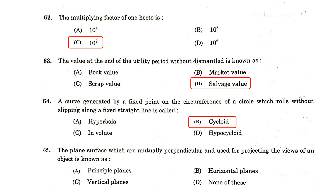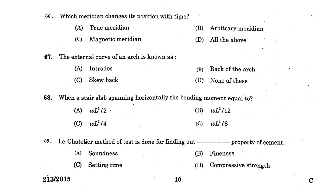The plane surfaces which are mutually perpendicular and used for projecting the views of an object are known as principal planes. Which meridian changes its position with time? Magnetic meridian. The external curve of an arch is known as the back of the arch.